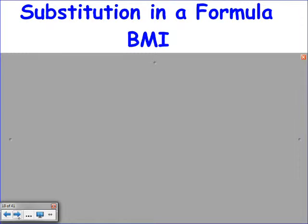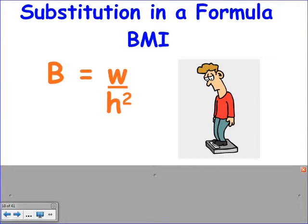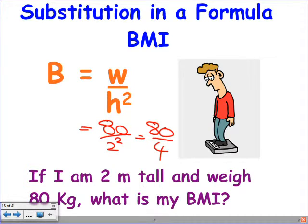BMI — body mass index — is the weight divided by your height squared. The healthy range is 20 to 25; below that is underweight, above 25 is overweight. I'm 2 metres tall and weigh 80 kilos. To calculate BMI: W is 80. Height squared is 2 times 2 which gives 4. 80 divided by 4 gives a BMI of 20 — he's healthy.